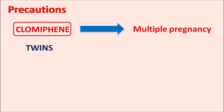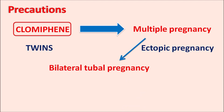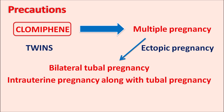An important precaution is that clomiphene can produce multiple pregnancy. While it may result in twins when used to stimulate ovulation, it can also cause ectopic pregnancy — for instance, bilateral tubal pregnancy — which results in failure of conception. Sometimes intrauterine pregnancy along with tubal pregnancy can be observed. Due to this risk, clomiphene should be given only to selected women after proper gynecological evaluation.